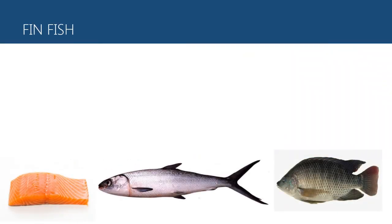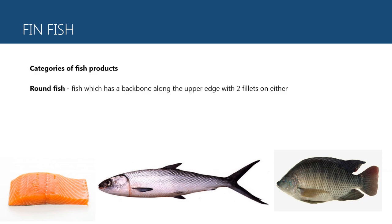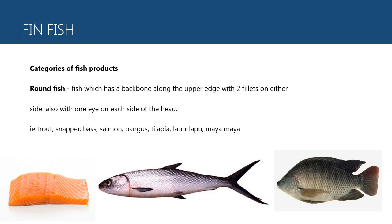First, fish or fin fish. We have three categories of fin fish. Number one is round fish, which has a backbone along the upper edge with two fillets on either sides, and one eye on each side of the head. Examples: trout, snapper, bass, salmon, bangus, tilapia, lapu-lapu, maya-maya.